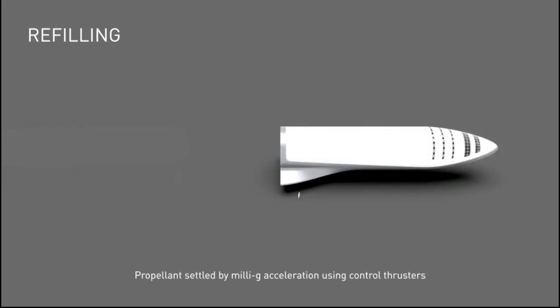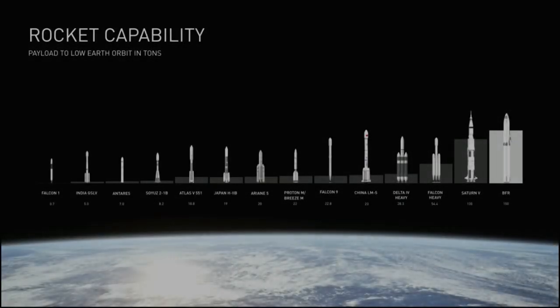For refueling, the two ships would actually mate at the rear section. They would use the same mating interface that they used to connect to the booster on liftoff.